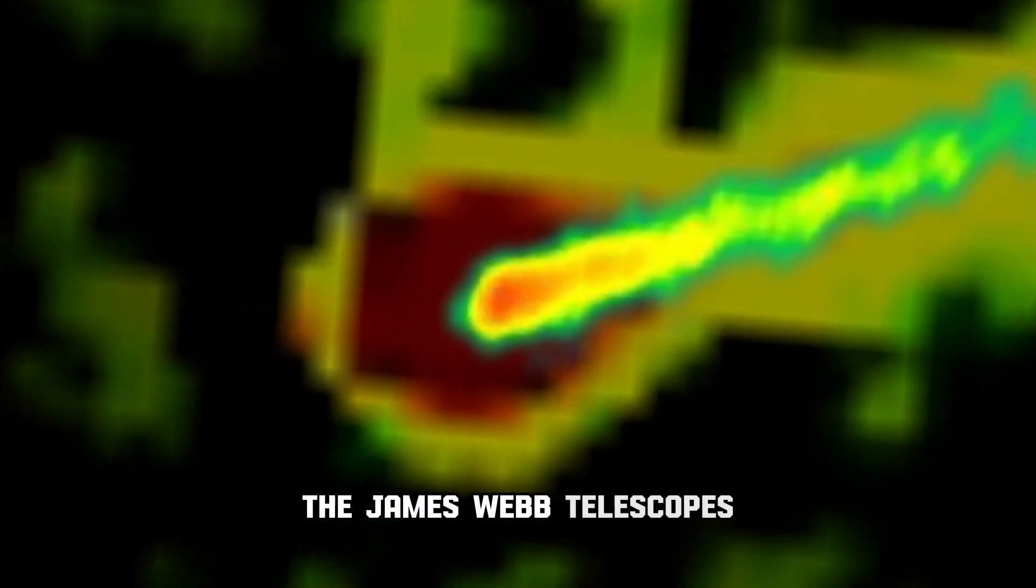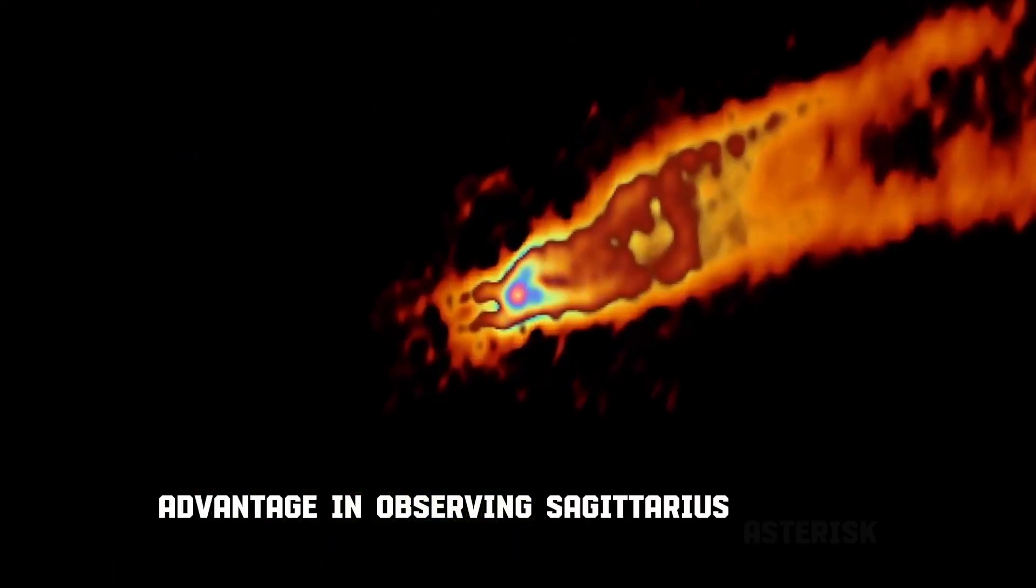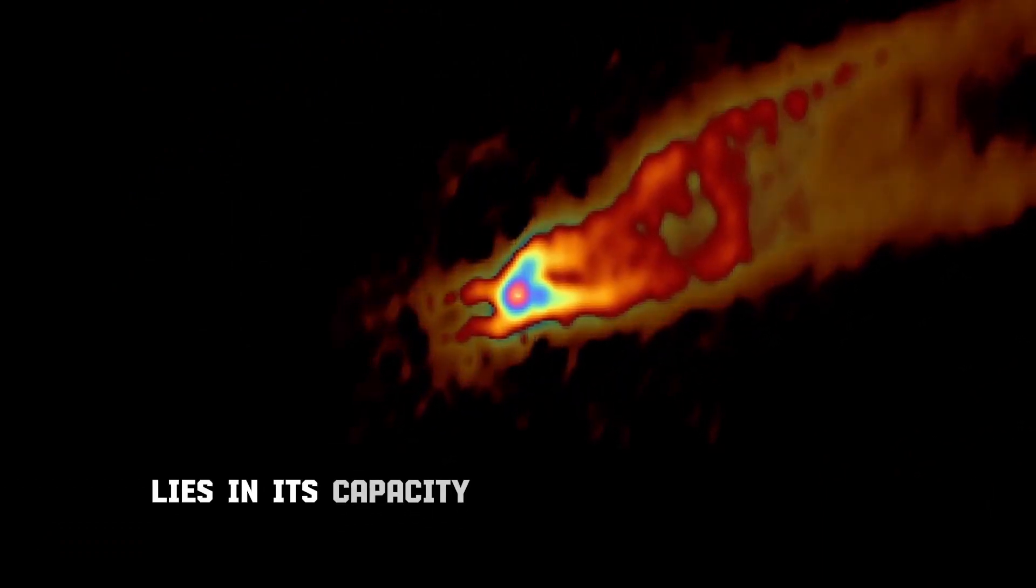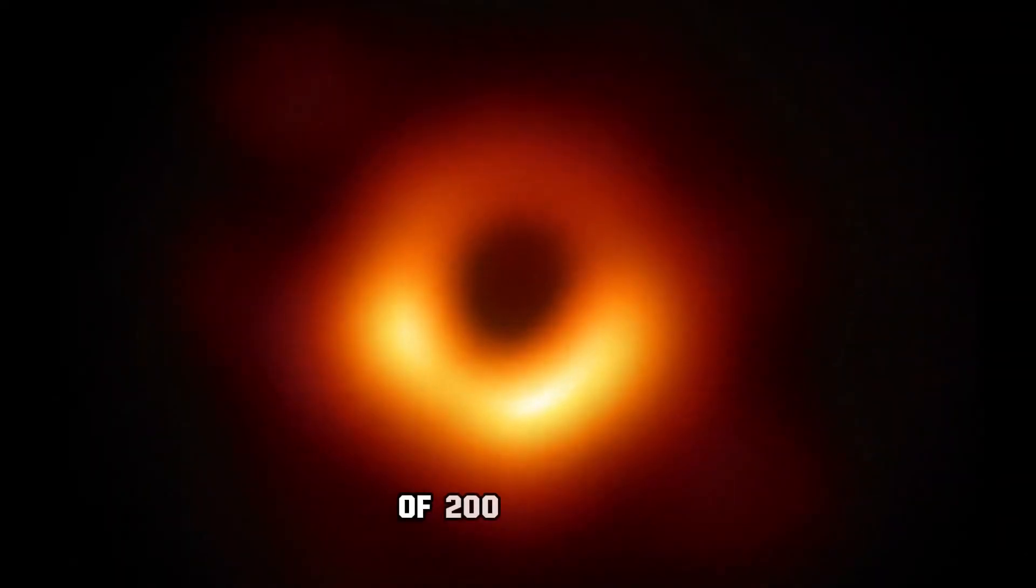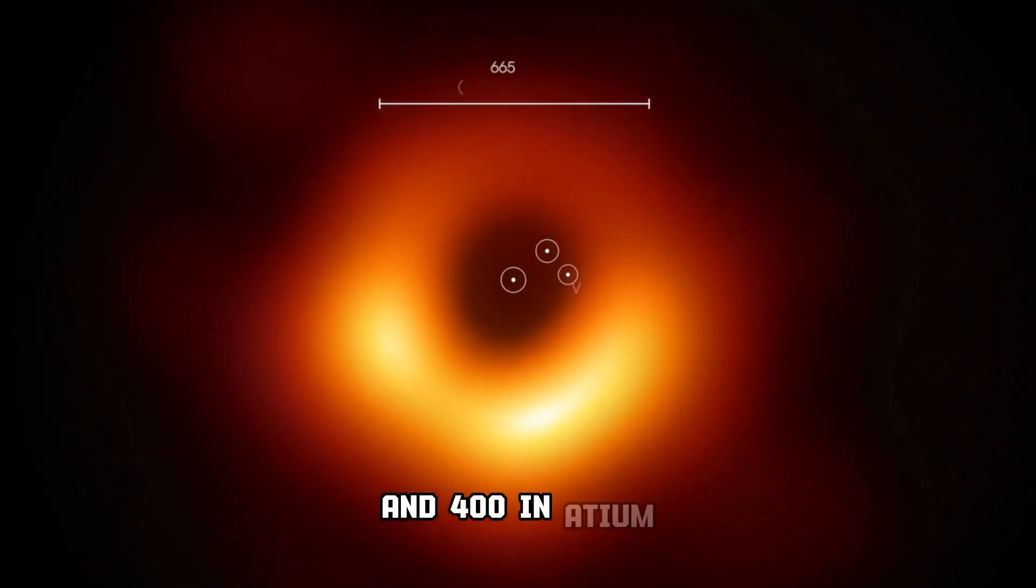The James Webb Telescope's advantage in observing Sagittarius A* lies in its capacity to capture data in two distinct infrared wavelengths simultaneously.